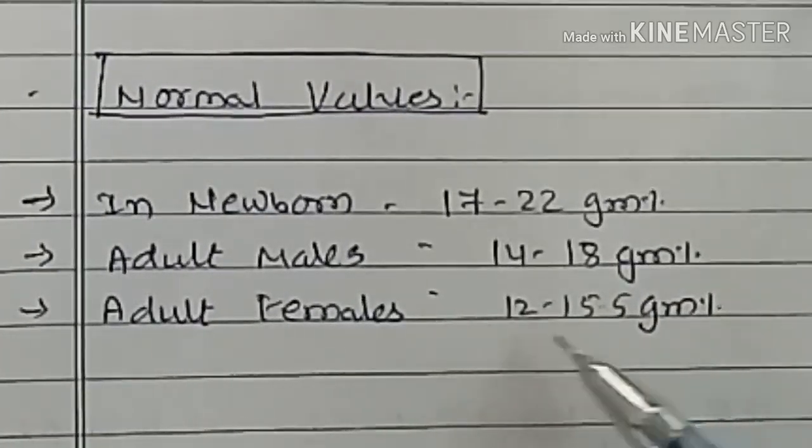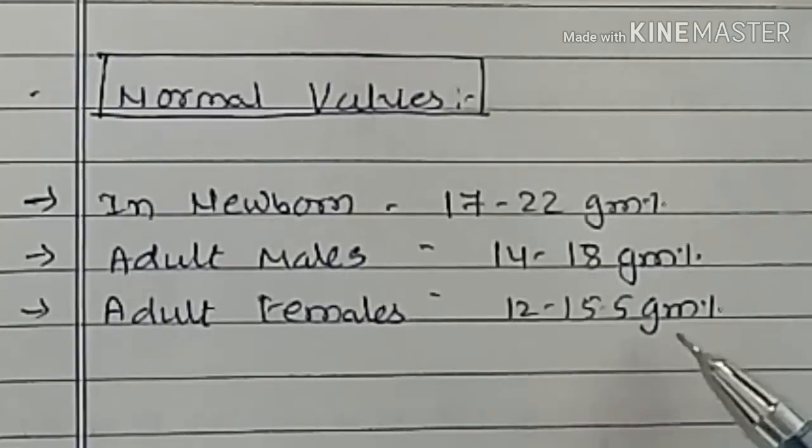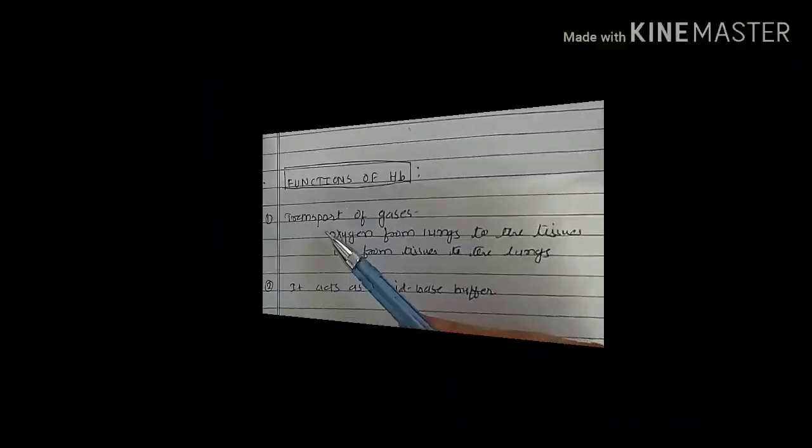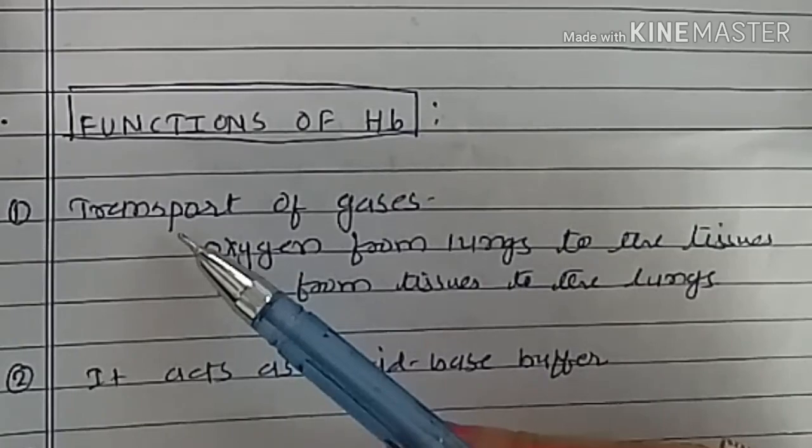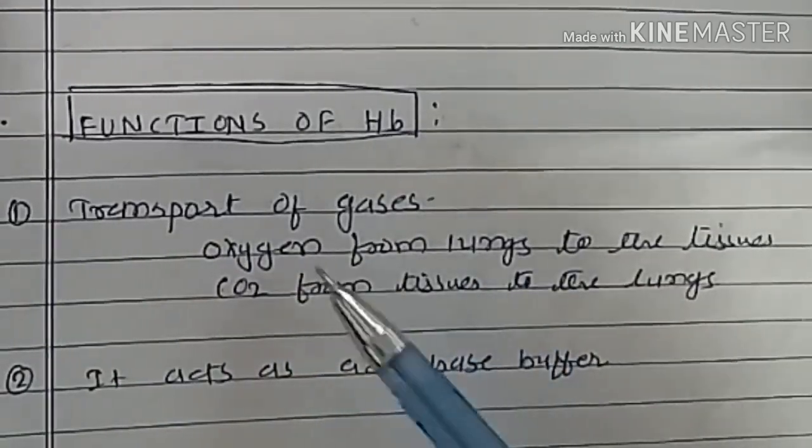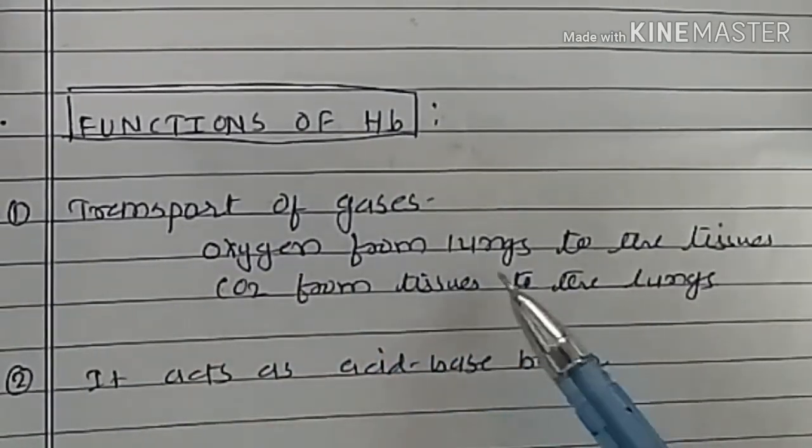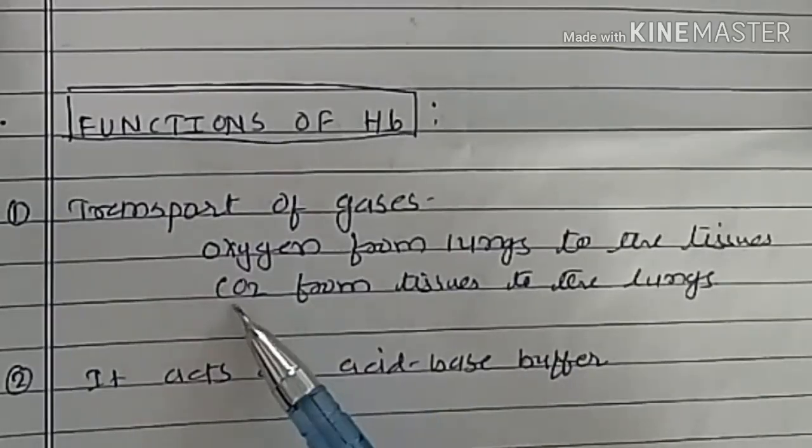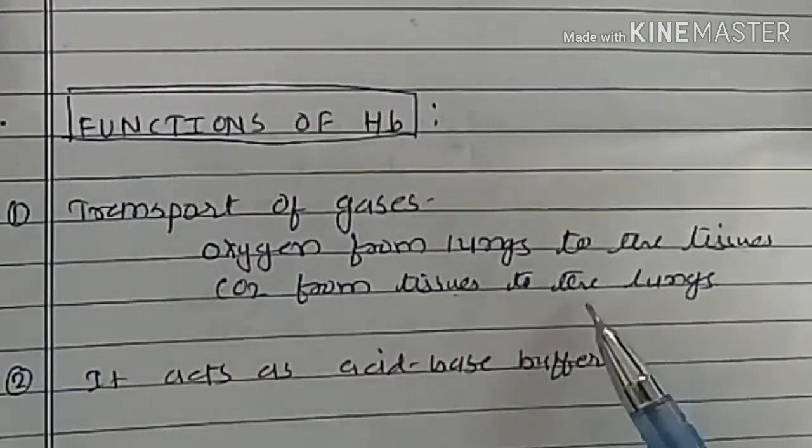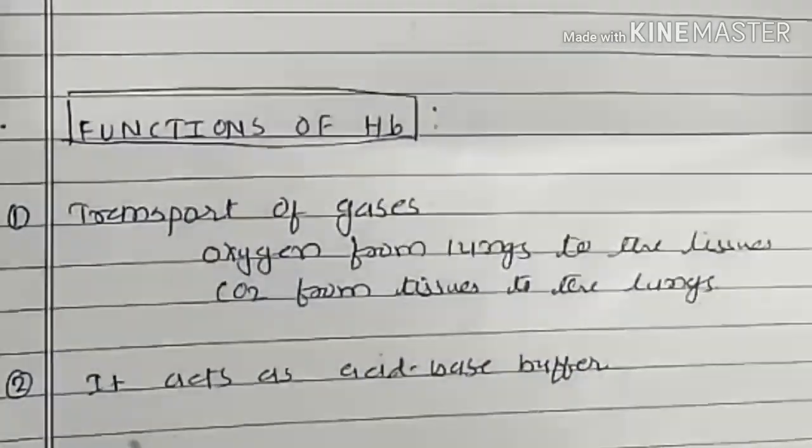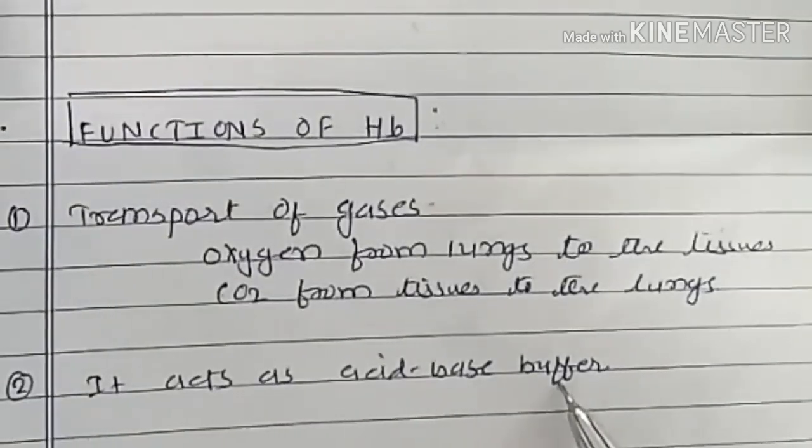Functions of hemoglobin. Hemoglobin helps in transport of gases: oxygen from lungs to the tissues and carbon dioxide from tissues to the lungs. It acts as acid-base buffer.